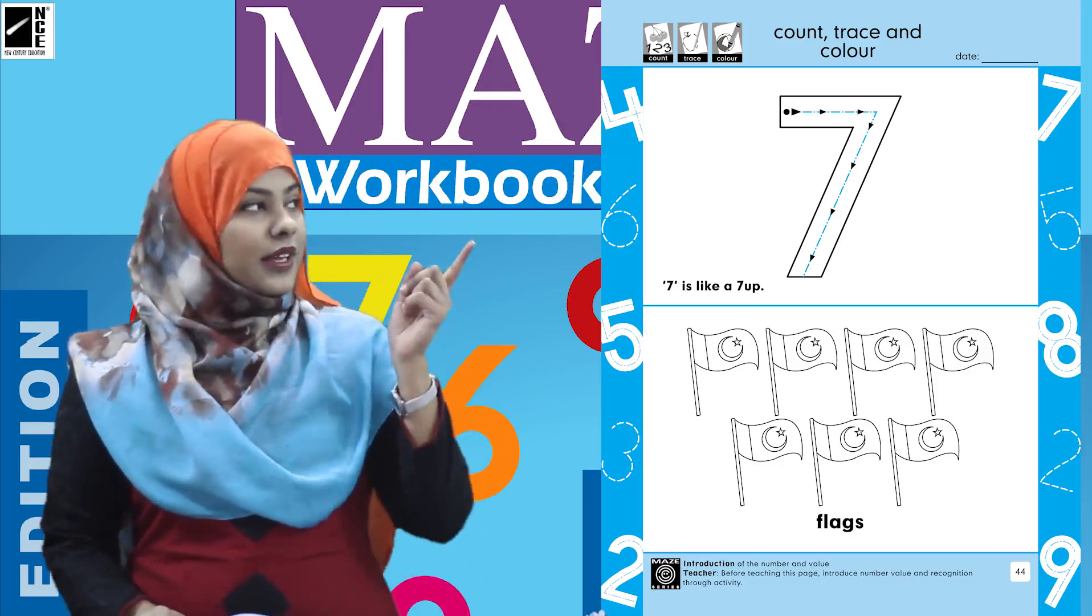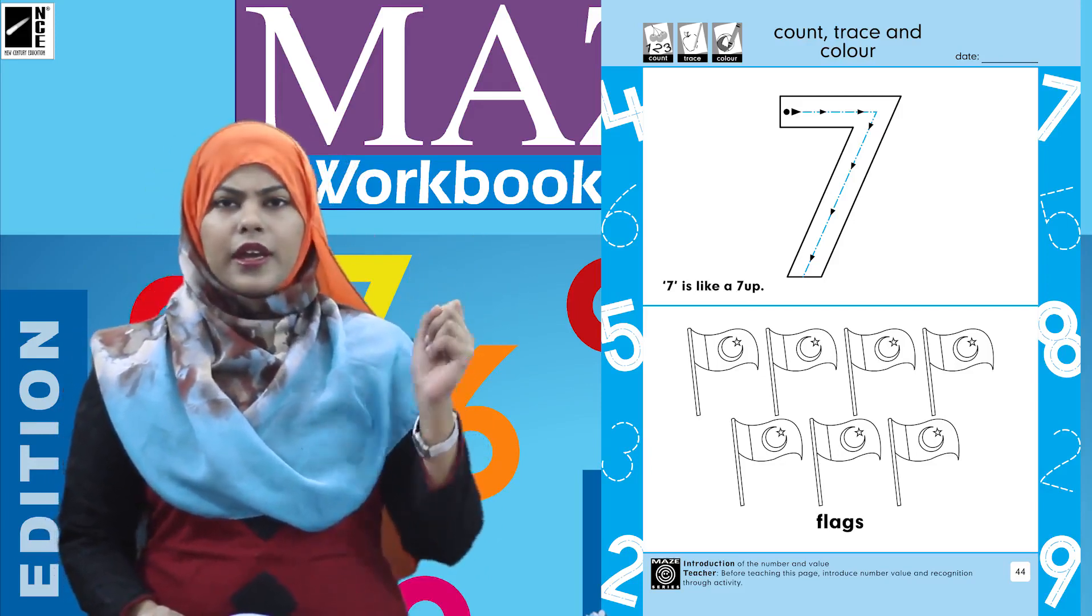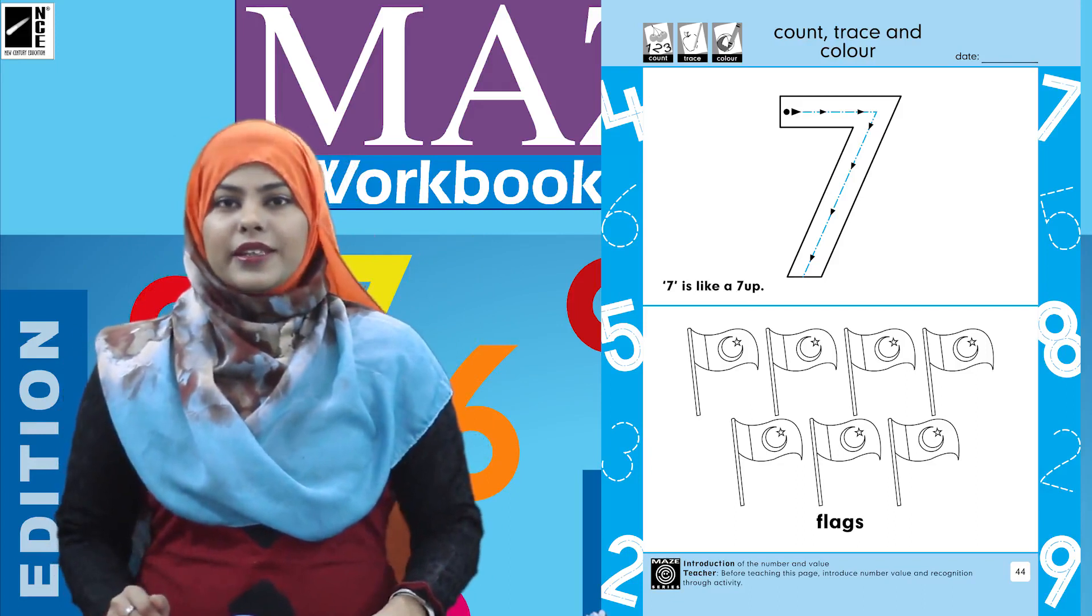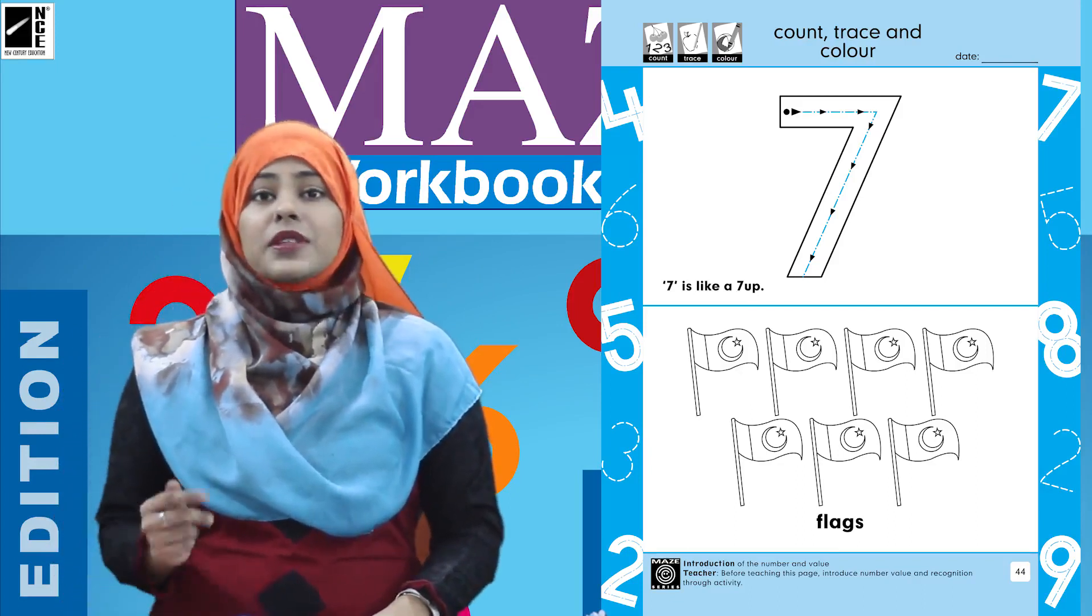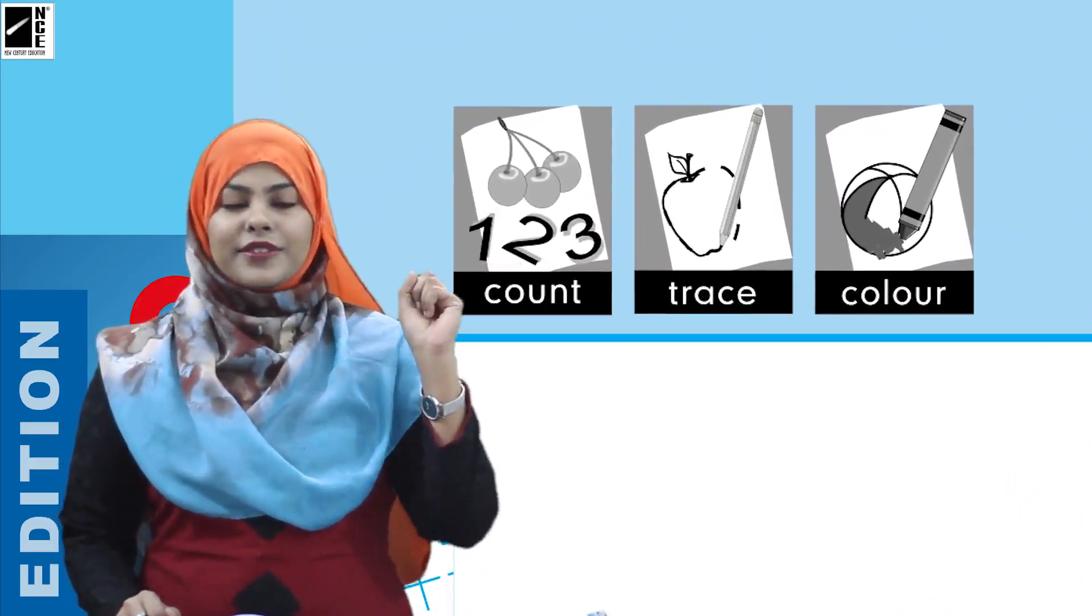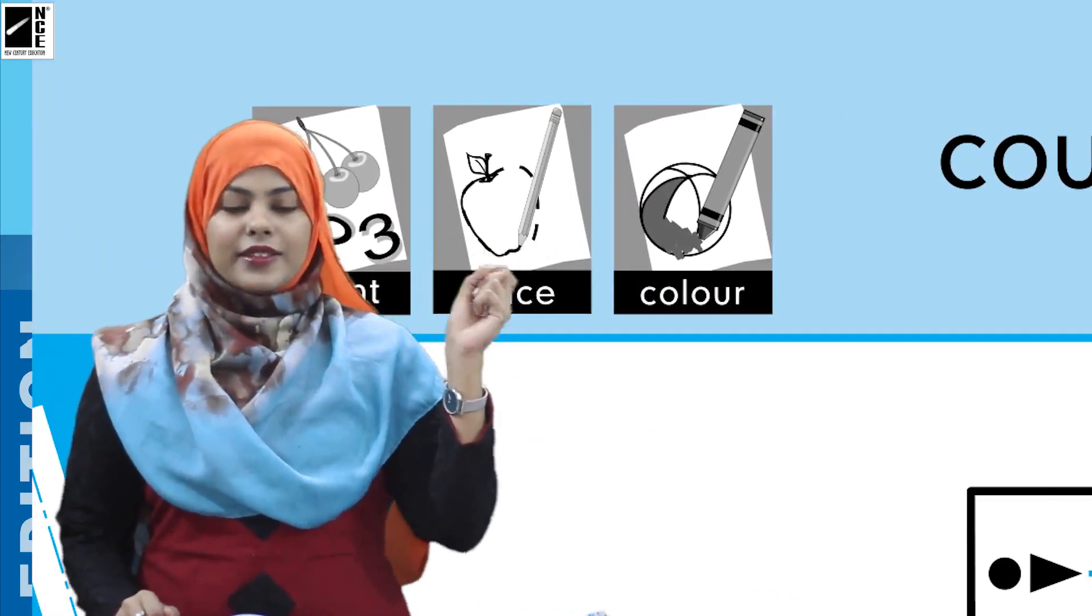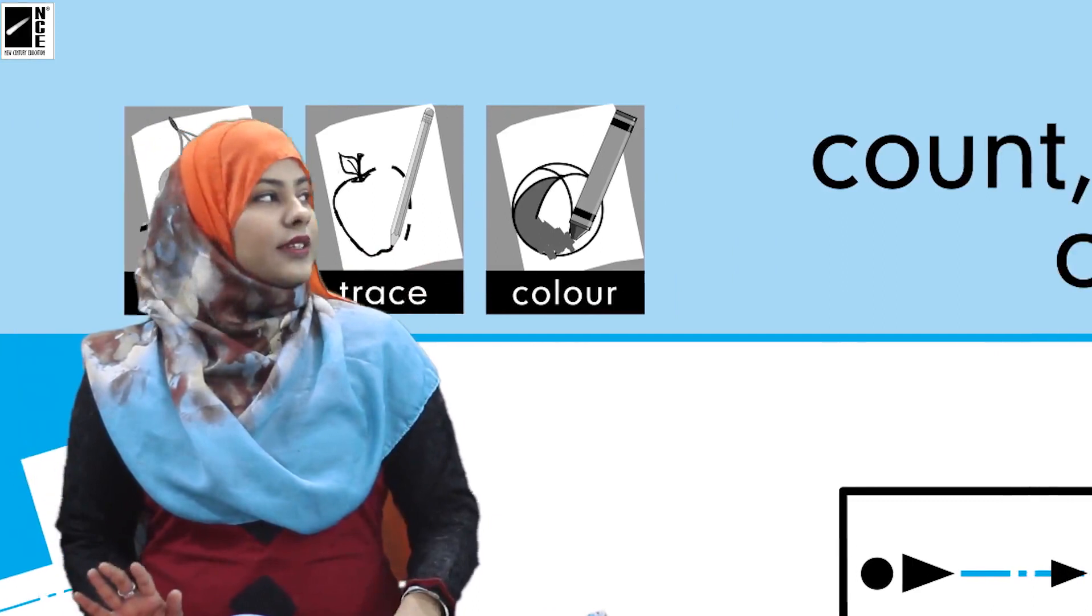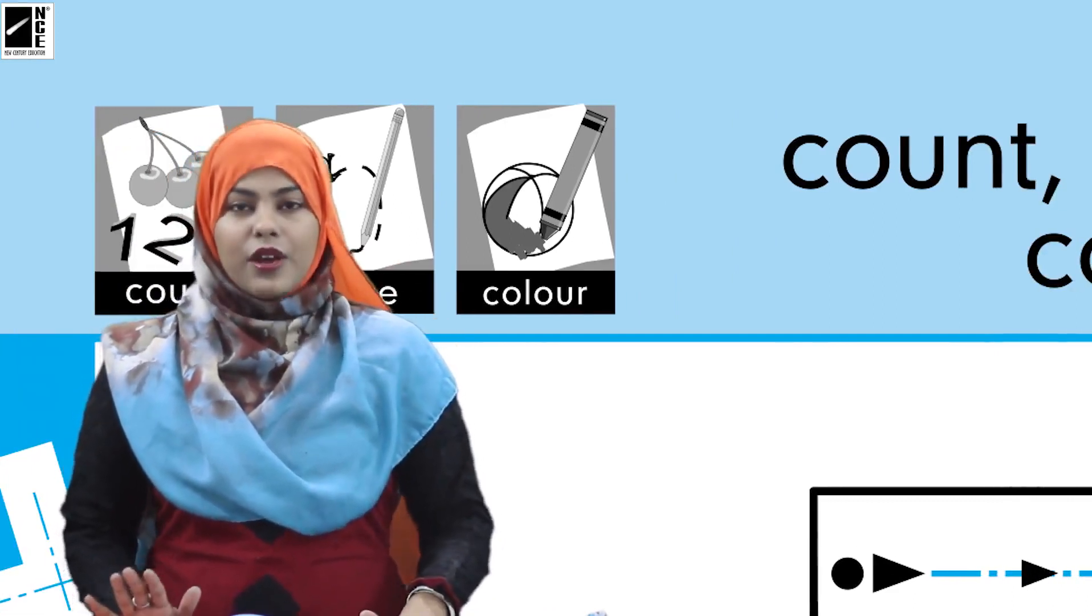Ab humare paas ek naya hai page aa gaya aur dekhen yahan par ek bada hollow number bana hua hai. As usual we have some icons and some pictures too. To hum pehle icons sikh lete hain ke humare paas kya kaam hai karne ko. Thik hai. First icon is count, and the next is trace, and the last is color.